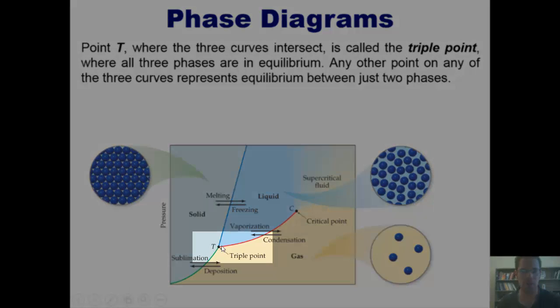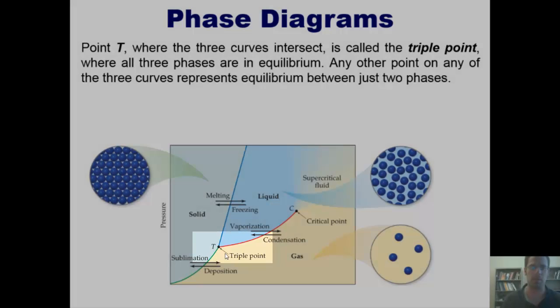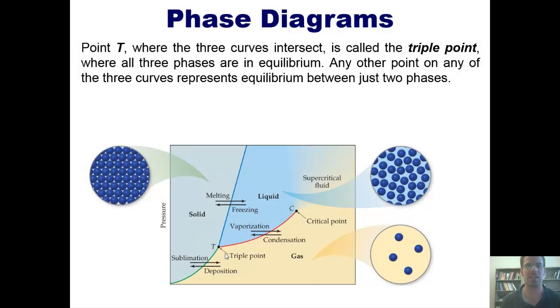Point T, right here, where all of the curves intersect, is called the triple point, where all three phases are in equilibrium. Any other point on any of the three curves represents an equilibrium between just two phases.